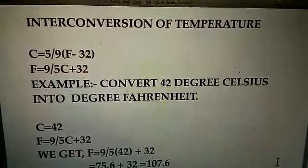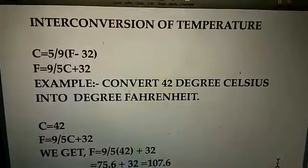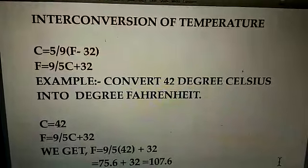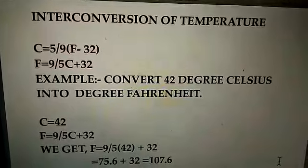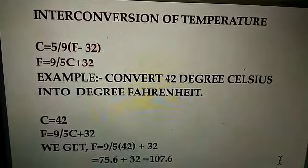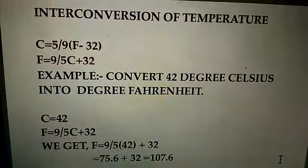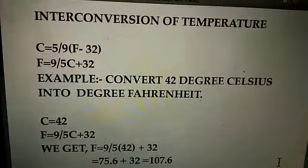Now the Celsius scale and the Fahrenheit scale can be interconverted. If you only know the Celsius scale and you want to know the Fahrenheit scale, you can use this formula: C is equal to 5 by 9 (F minus 32). Or if you want to find out the Fahrenheit scale, you can use the formula 9 by 5 C plus 32.